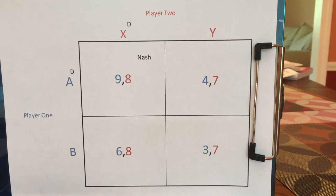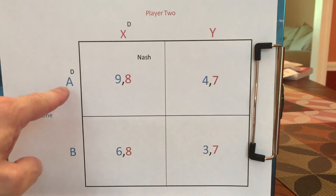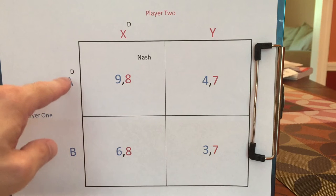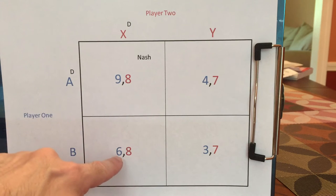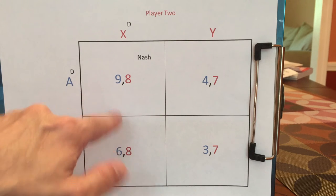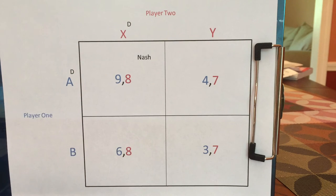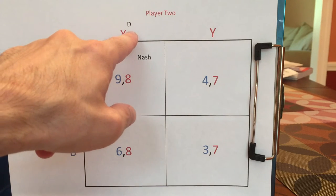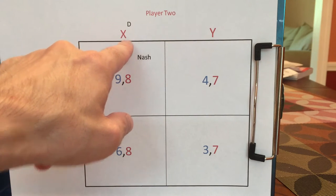When player one sees that player two picked X, player one will not regret having written A because, had player one written B, they would have gotten a lower payoff. So player one doesn't regret writing A when they find out that player two picked X.